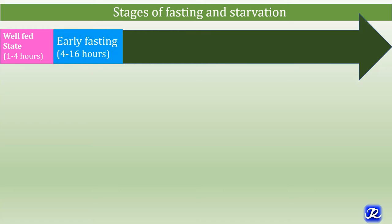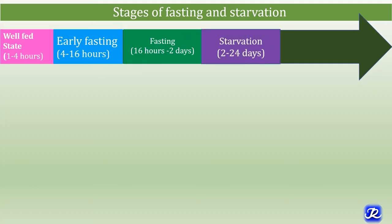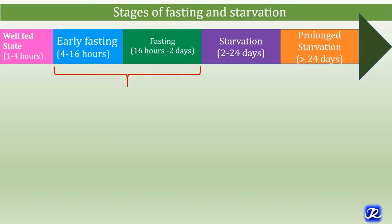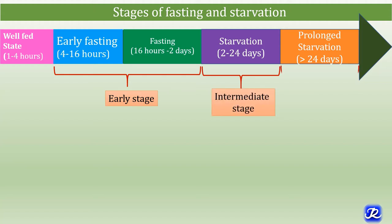Early fasting starts after the absorptive phase and lasts up to 16 hours, also called the post-absorptive phase. Fasting lasts from 16 hours to 2 days, starvation from 2 days to 24 days, and prolonged starvation more than 24 days. Early fasting and fasting (4 hours to 48 hours) is also called the early stage of starvation. 2 to 24 days is the intermediate stage, and more than 24 days is the advanced or prolonged stage of starvation.